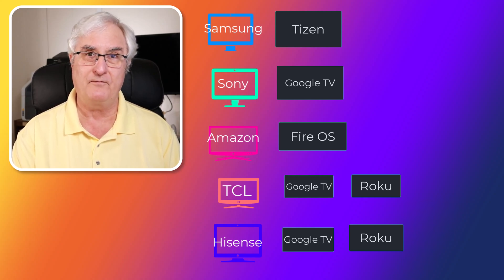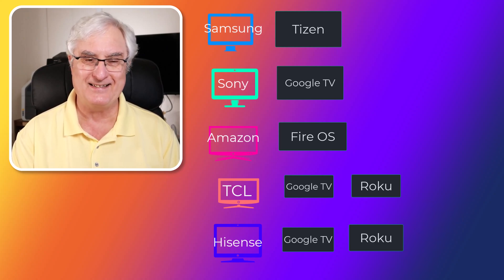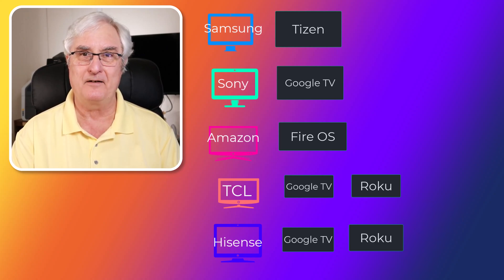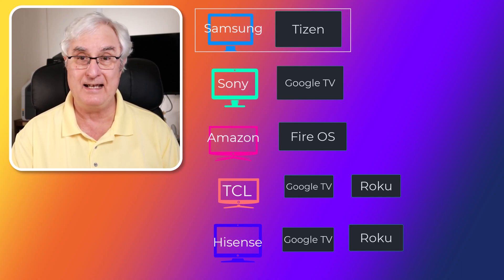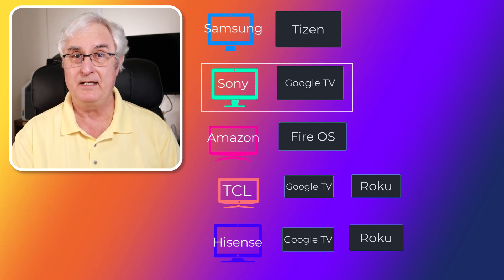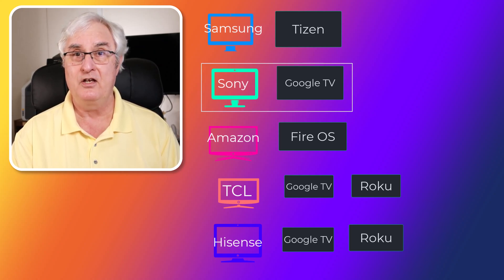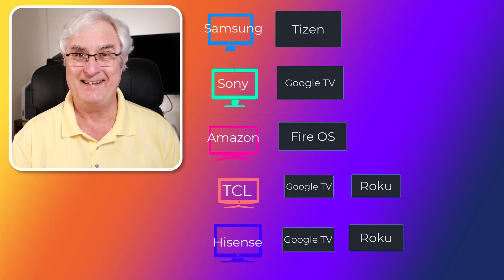Let's look at our five TVs again and go over what those operating systems are. For Samsung, the operating system is Tizen — T-I-Z-E-N. For Sony TV, it depends on the year, but in the last five years Sony's operating system has been, you guessed it, Google TV.